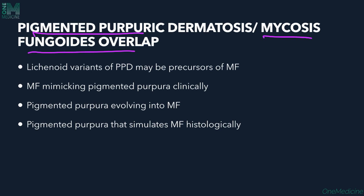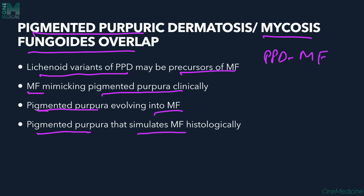There is an overlap between PPD and mycosis fungoides (MF). The lichenoid variants of PPD may be a precursor of MF, or MF may mimic pigmented purpura clinically. Alternatively, pigmented purpura can evolve into MF, or purpuric MF can be present histologically. Any of these combinations can occur.